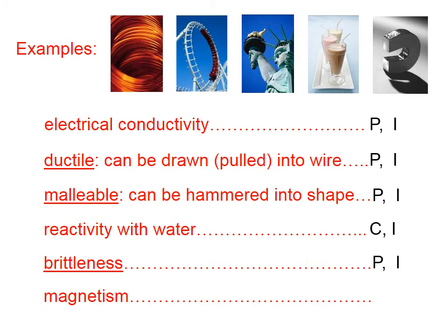Brittleness, like ductility and malleability, is a physical property. We don't have to do a chemical reaction to observe it. And brittleness is reflective of the composition, the atoms, and how they're bonded. That is, it is an intensive property. And magnetism also is a physical property and an intensive property.